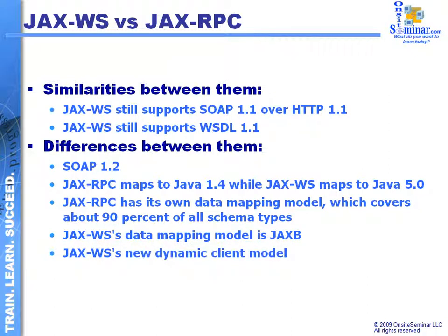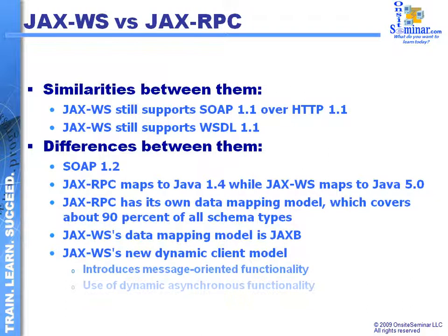JAX-WS also introduces a couple of different client dynamic models. One is message-oriented functionality, where we divorce ourselves from having to deal with message processing aspects directly — this is part of what JAXB does for us. In addition, there is new dynamic asynchronous functionality in JAX-WS with new interaction models. These don't affect the programming perspective directly, but they do affect how messages are structured, sent, and handled.